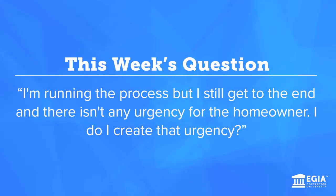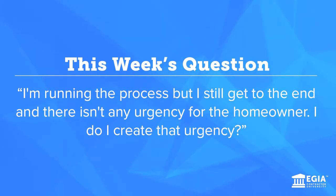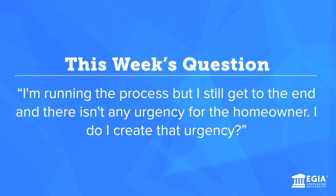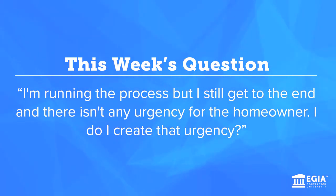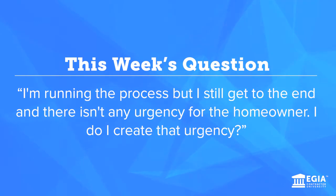We got a question from a viewer, and it goes something like this: I'm out on the lead. I'm running the process. I'm doing everything I'm supposed to do based on the process, the system that I've learned. But still I get to the end, and there's zero urgency on the part of the homeowner. How do I create urgency?